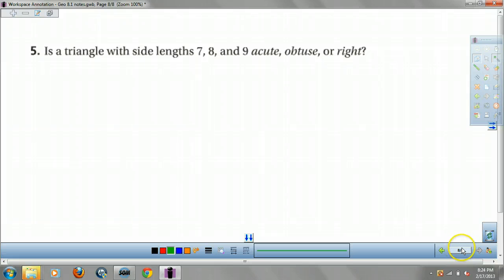Is this acute, obtuse, or right? I'm going to take my two legs. A squared plus B squared. And here's my C squared. I get 49 plus 64. Add these guys together. I get 103.